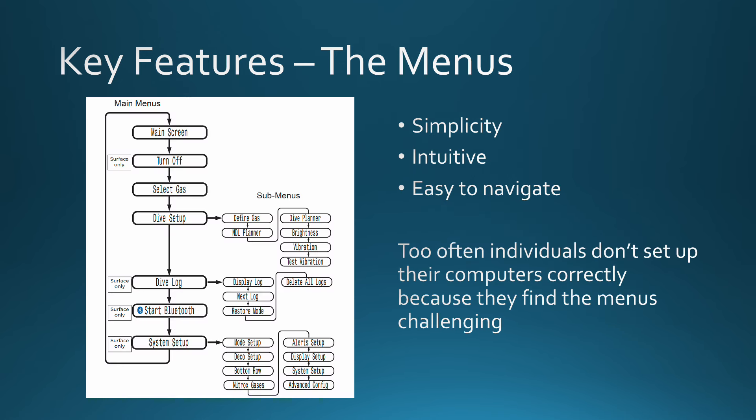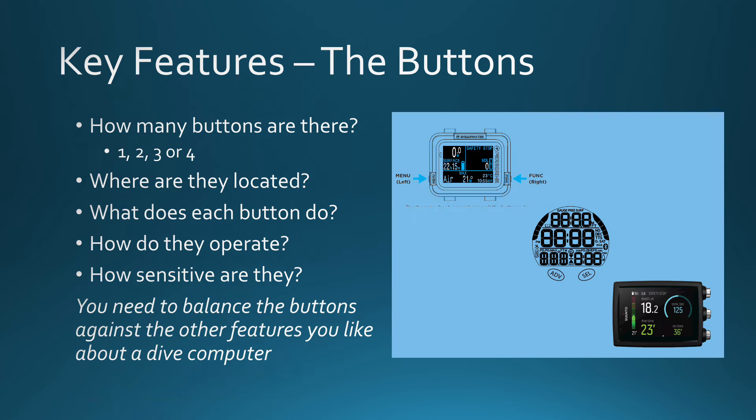All computers have a menu structure to allow you to set up your computer as well as cycle through important information related to your dive. You'll want to understand the menu structure — is it simple and intuitive to understand, and more importantly, is navigation through the various areas easy? Sometimes people don't properly set up their dive computer because the menus seem too complicated. Going hand in hand with the menu structure and equally important are the buttons. Dive computers can come with one, two, three, or four buttons for paging through various screens, entering information, or setting parameters. Some computers allow you to adjust the sensitivity of the buttons. You will need to ensure that you understand the purpose and function of each button on your computer.